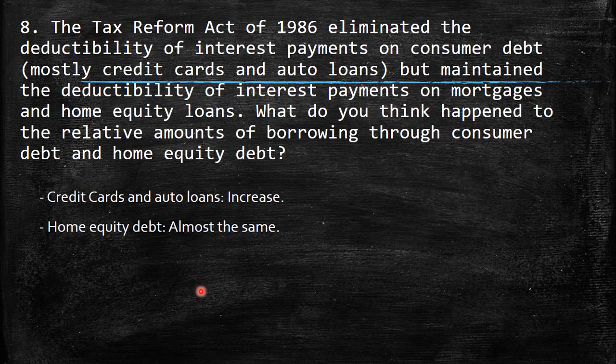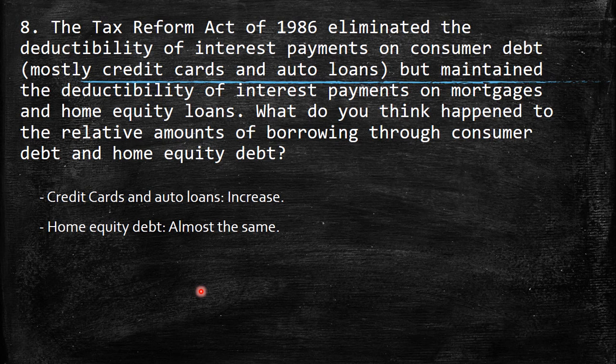On the other side, we have the home equity debt. It's not kind of immediate because you have two points of view. You would say the tax is higher so you need to pay tax for that, so definitely it will decrease. But on the other side, there are different factors — for example, when someone is going to buy a home, maybe it's a once-in-a-lifetime decision, so it's kind of inelastic. We also need to take into account the interest rate, not only the tax. I would say it's almost the same, but the trend could be a little bit lower.